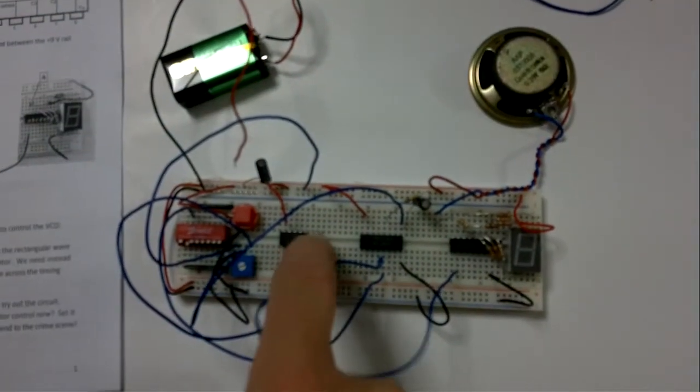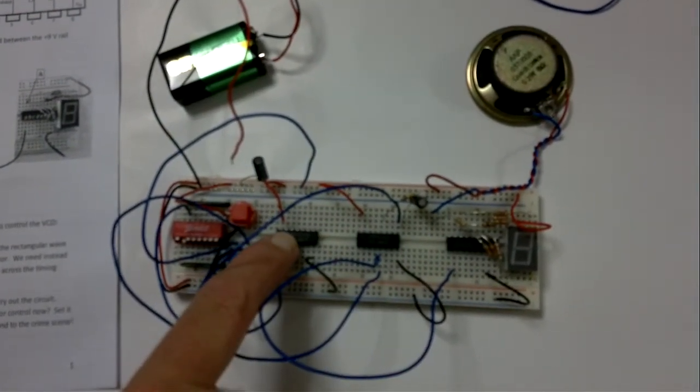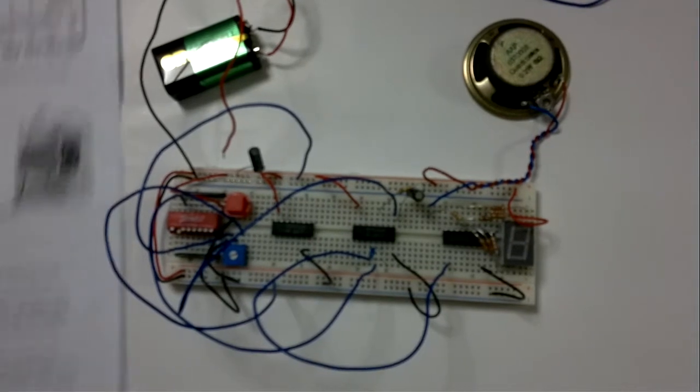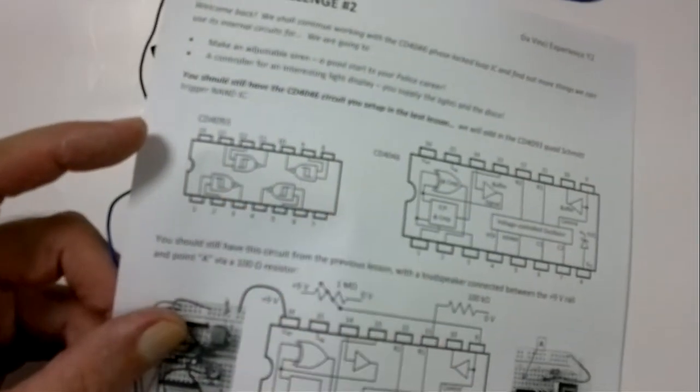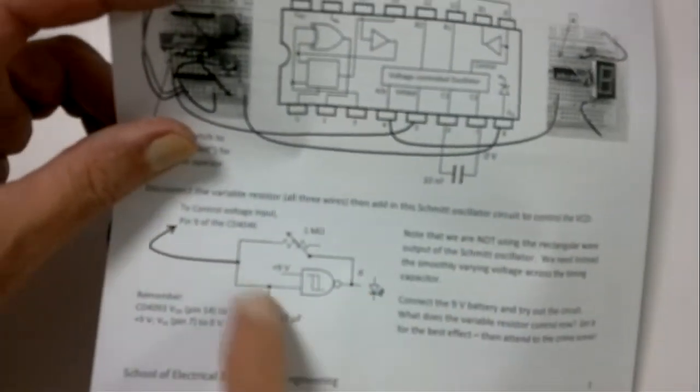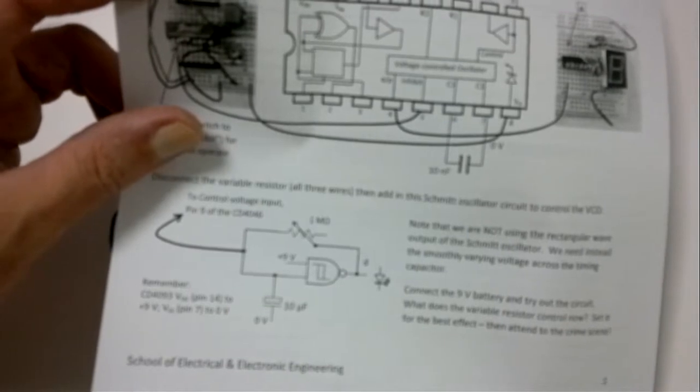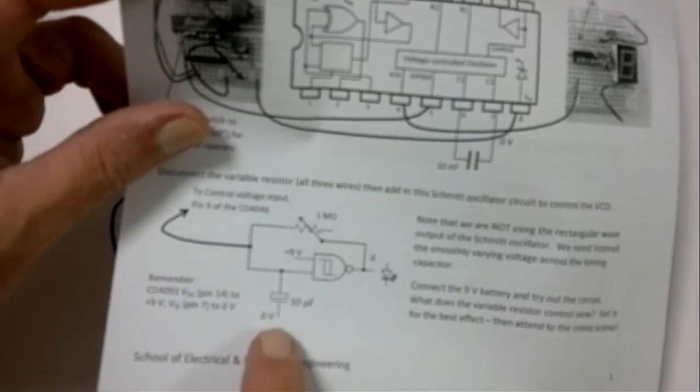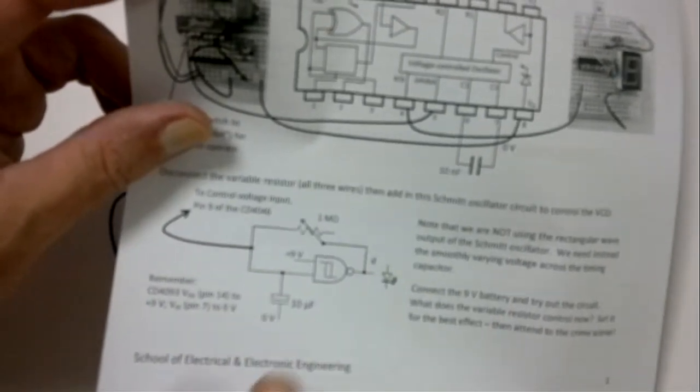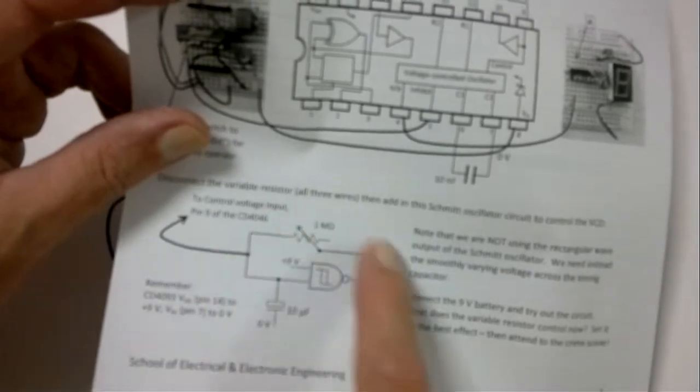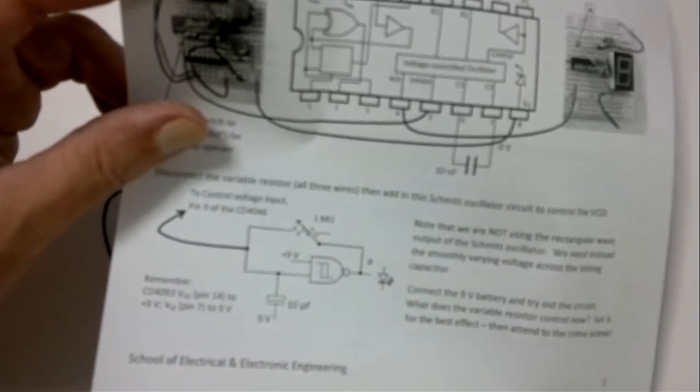We're going to have a 4093 CMOS IC, which is a little set of four Schmidt trigger NAND gates, which are fabulous for making a lot of circuits. And we're just going to make a little oscillator with this. So there's a 10µF power capacitor on the input, and that's going to charge and discharge via our 1 meg resistor.